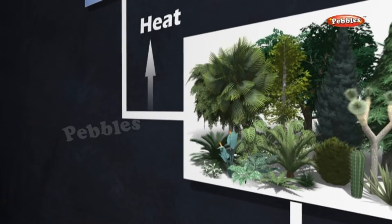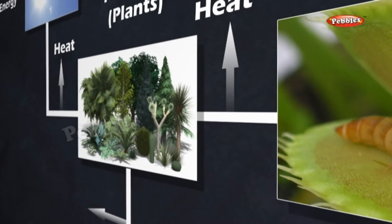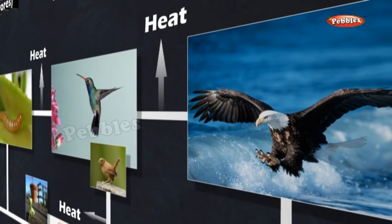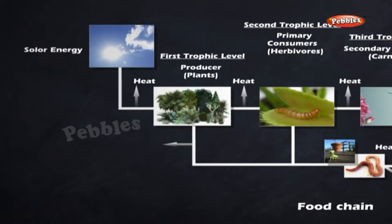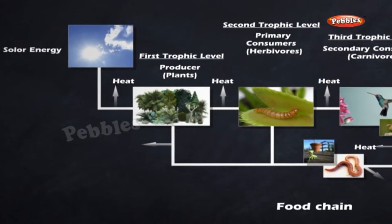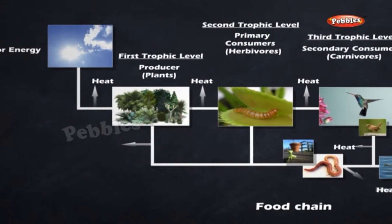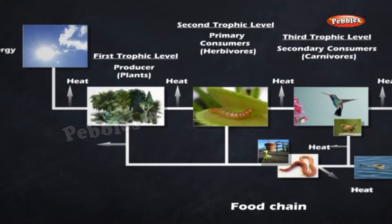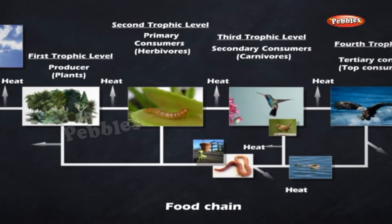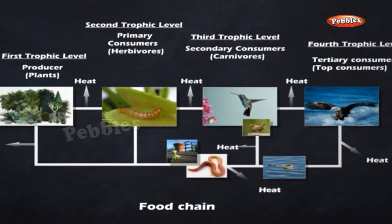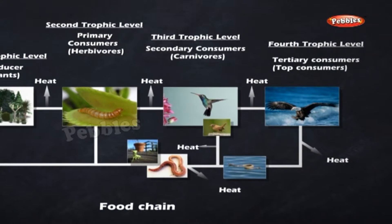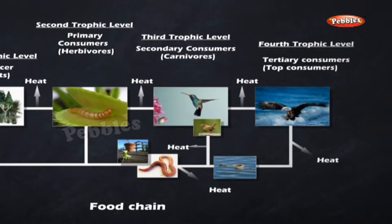Food Chain: The sequential process of food transfer from plants through a series of organisms with repeated eating and being eaten is called a food chain. In simple words, a food chain indicates who eats whom in an ecosystem. A food chain always begins with a producer, followed by a herbivore and then a carnivore. At each step, a lot of energy from food is lost as heat. Therefore, the number of steps in any food chain is limited to four or five. Each step represents a trophic level. A simple food chain can be represented as shown.